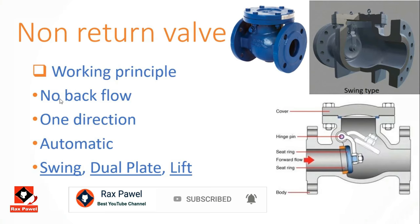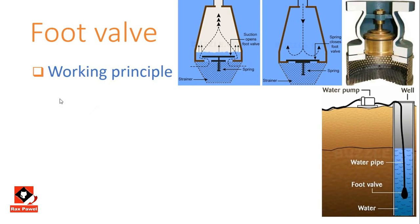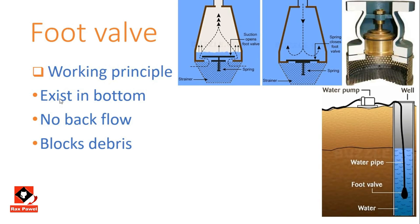Working principle of foot valves: this is also a check valve, used at the bottom of a pipeline. They are typically present when water is being drawn from a below-level water source. The foot valve prevents backflow to ease the suction process and also prevents impurities and debris from entering the pipeline.